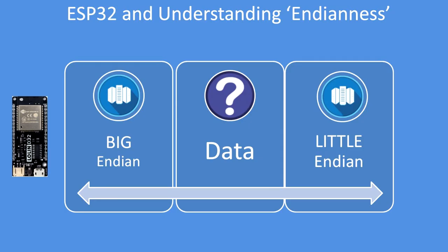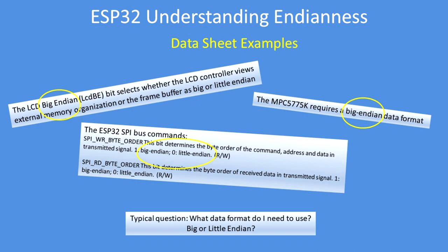If you use microcontrollers like the ESP32 or the 8266, sensors or screens, you really need to understand the term Endianness — you'll see it referred to quite a lot. Here are some extracts from typical data sheets where the terms Big Endian and Little Endian are referred to quite a lot. The typical question you need to ask yourself is: what data format do I need to use when using this device — do I need a Big or a Little Endian data format?